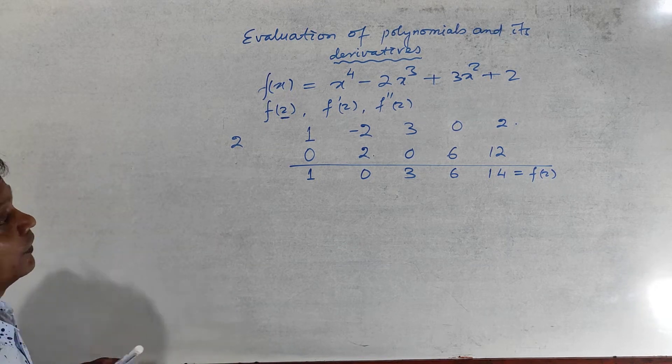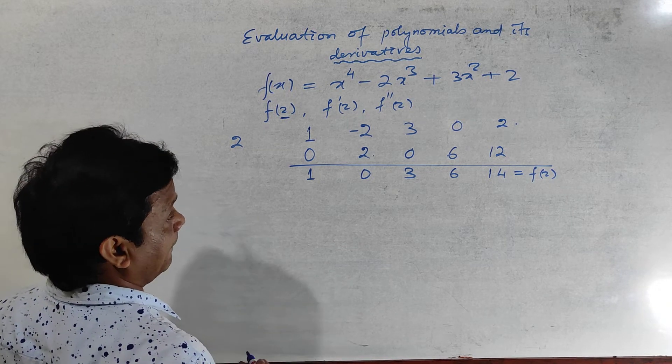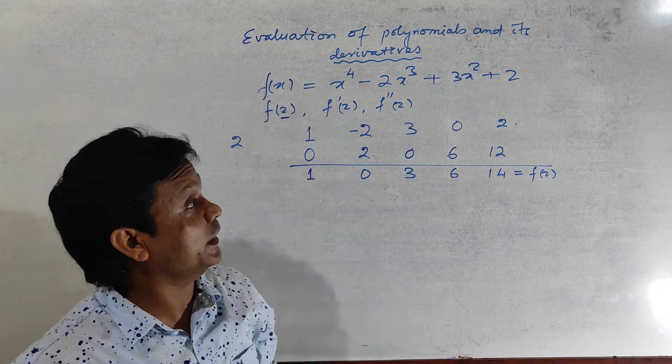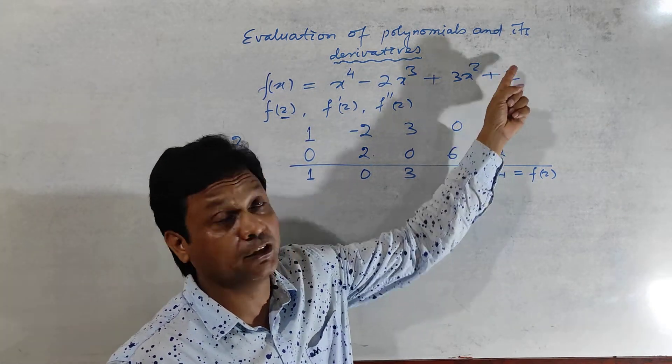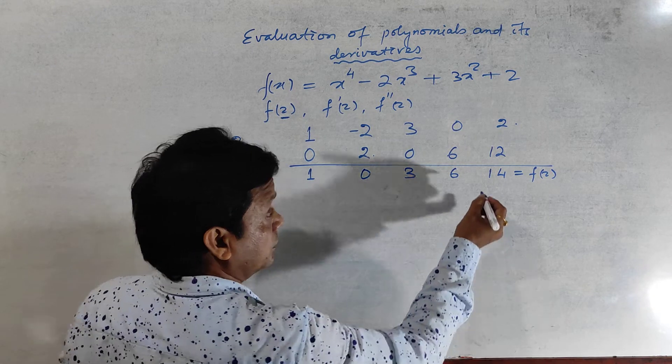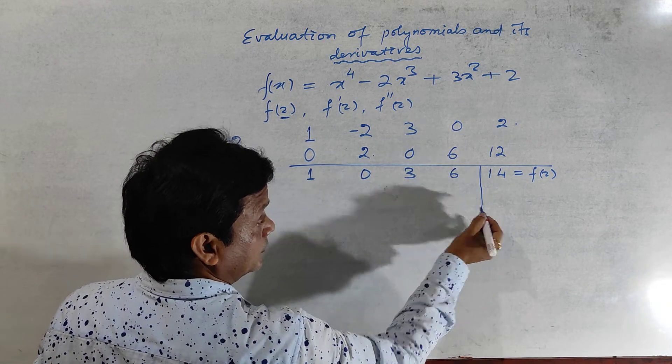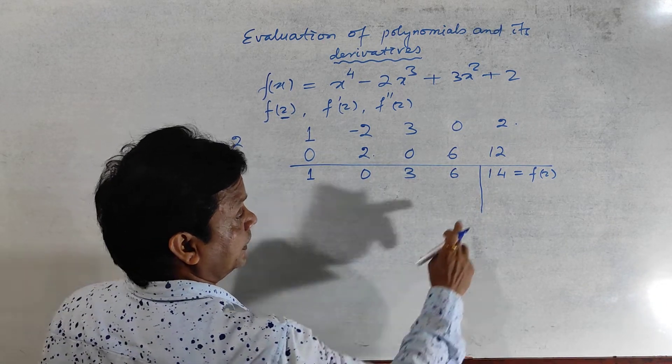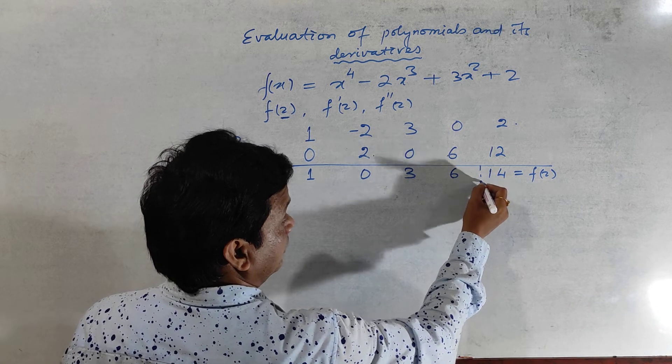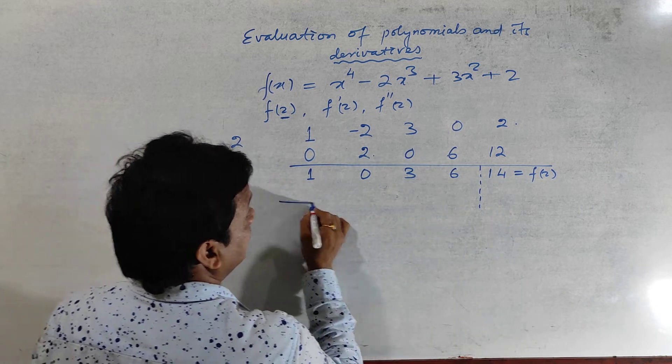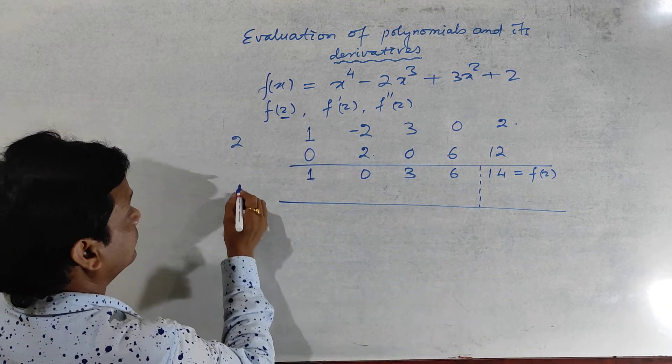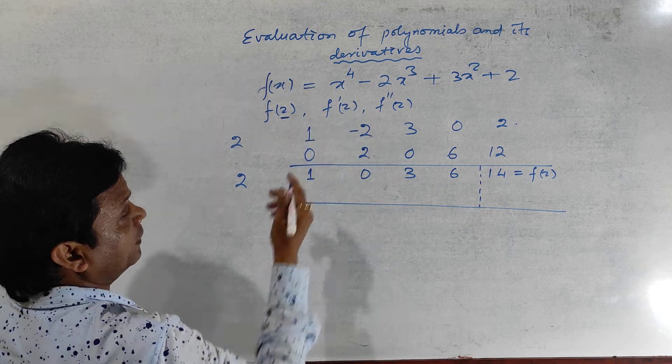Now see here, how to find out f dash 2. And while finding the derivative, the derivative of the constant term will be 0, so you should eliminate the last column, last column. So you should not write this one. Again proceed similarly, again 2 is there, because you have to find out f dash 2.